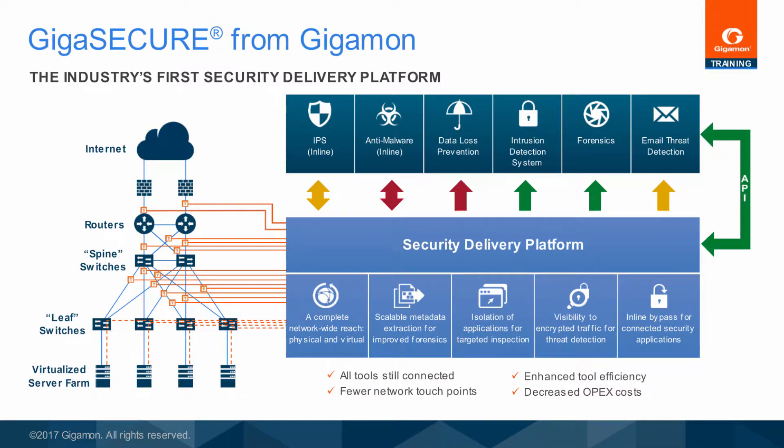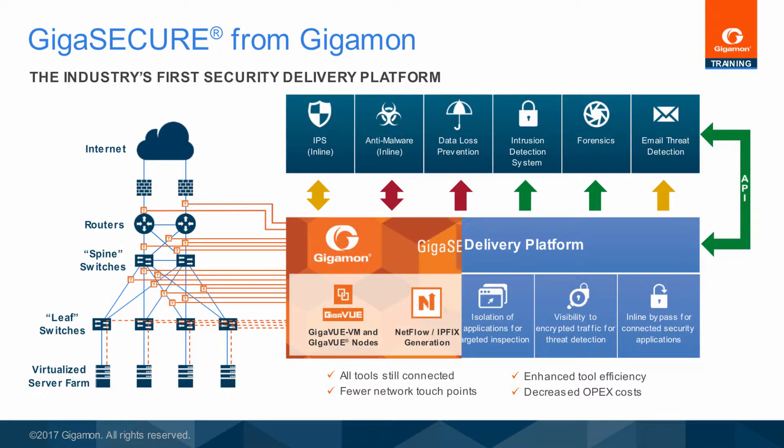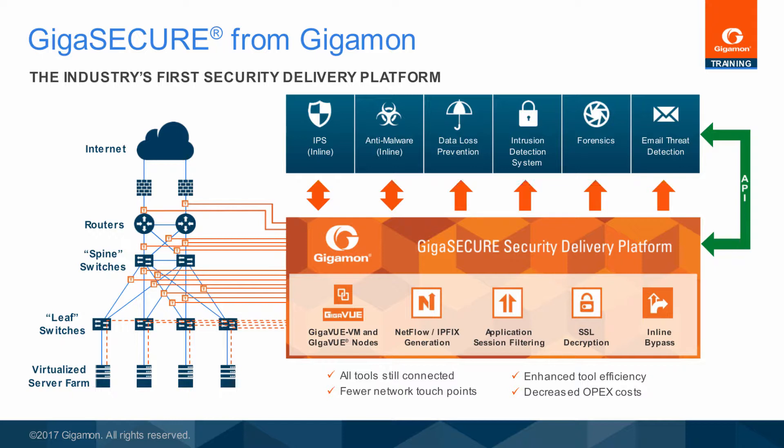A security delivery platform should be at the center of a network security architecture geared toward threat detection and response. Through such a platform, organizations can begin to unify their security applications, eliminating blind spots and partial coverage. In order to support such security architecture, GigaMon has deployed the industry's first security delivery platform, GigaSecure.